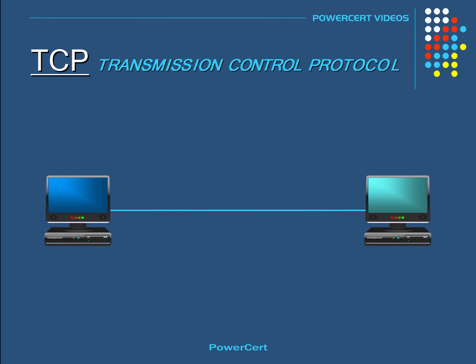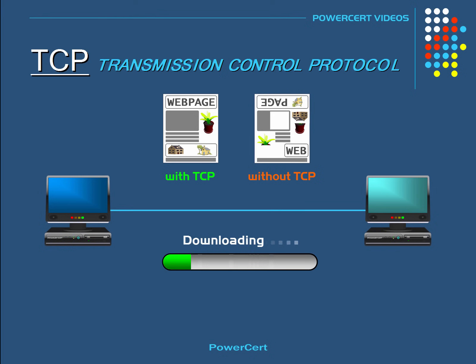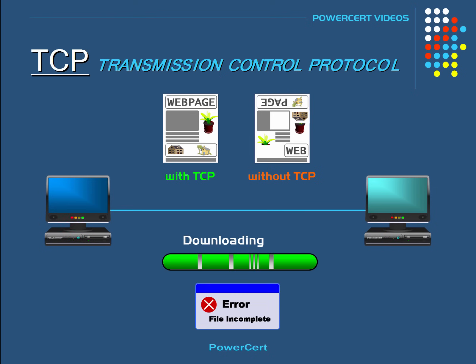Because without TCP, some of the data could be missing or out of order. If you view a web page without TCP, your web page could be all messed up. The images could be missing or the text could be backwards and out of order. Or if you download a file, you might not get the entire file or you could get the file out of order, which would render the file useless.